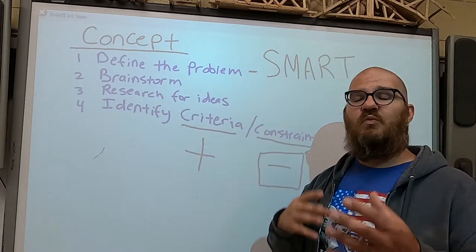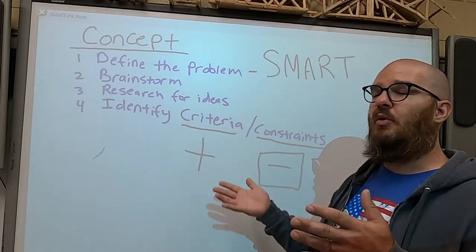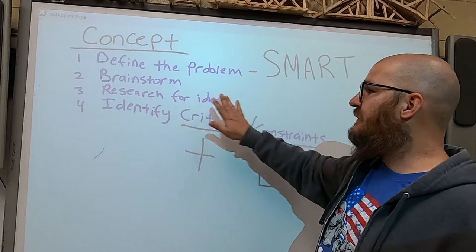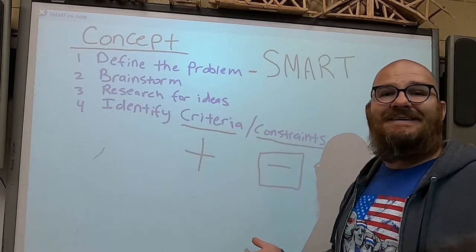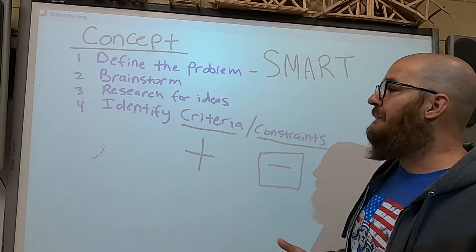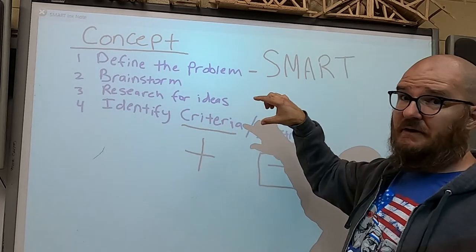Brainstorming is coming up with rapid-fire ideas quickly as possible, whether they're sane or insane. Research for ideas means to go find the experts. Go see what's already done out there. See if you can modify that. Write both of these things down in your engineering notebooks.